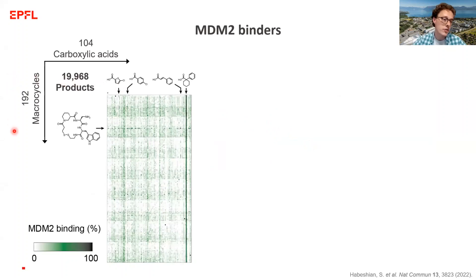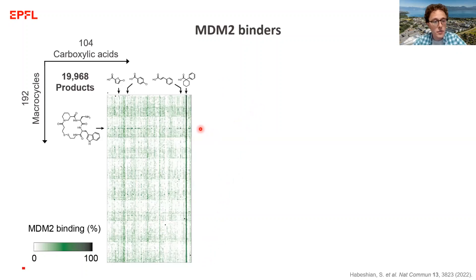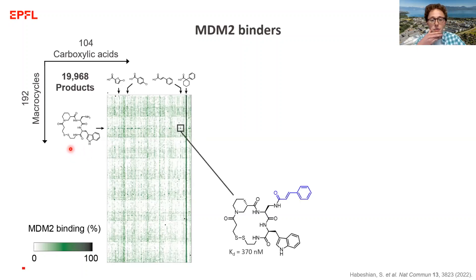I'll quickly mention a very similar approach against MDM2. In this case we synthesized 192 macrocycles, which were combinatorially reacted with around 100 carboxylic acids. This used a fluorescence polarization assay — the result is noisier — but we could see one row showing many green wells, suggesting that peptide scaffold has a tendency to inhibit MDM2. We re-synthesized one of the most inhibiting combinations and found a sub-micromolar binder to MDM2, though a rather weak one.